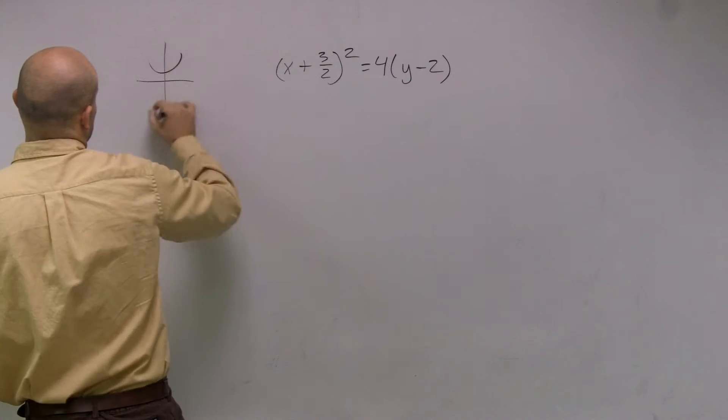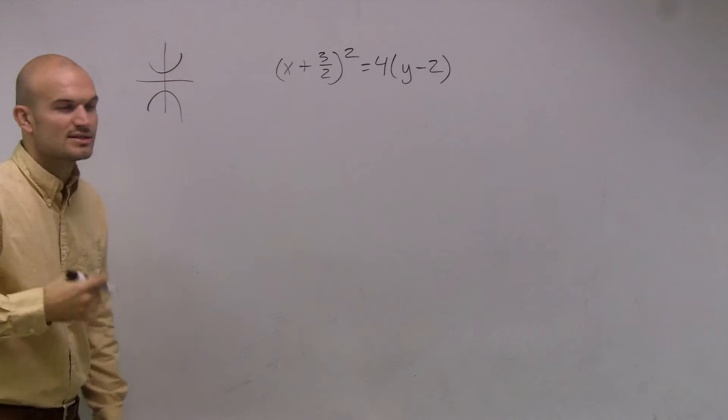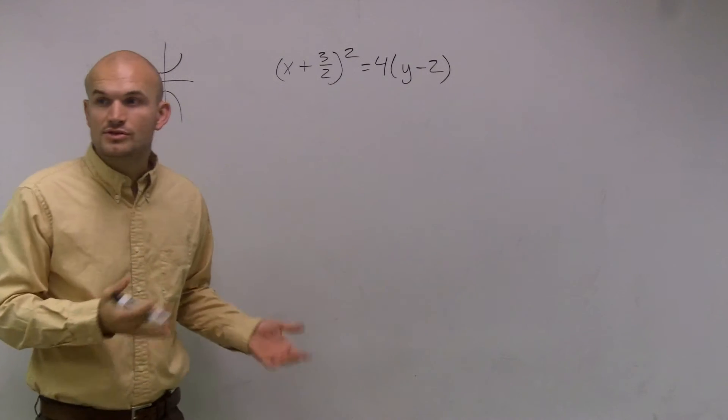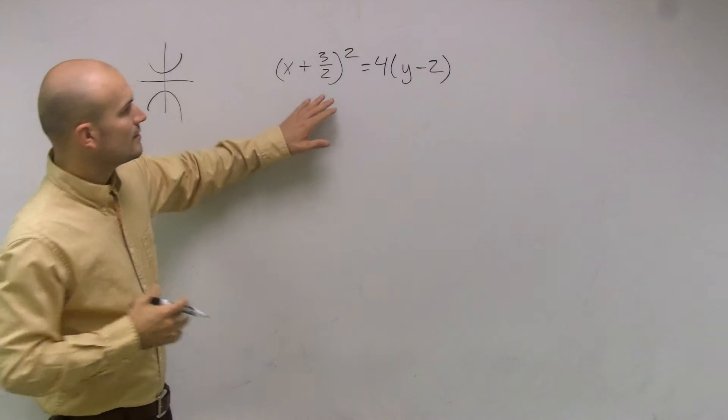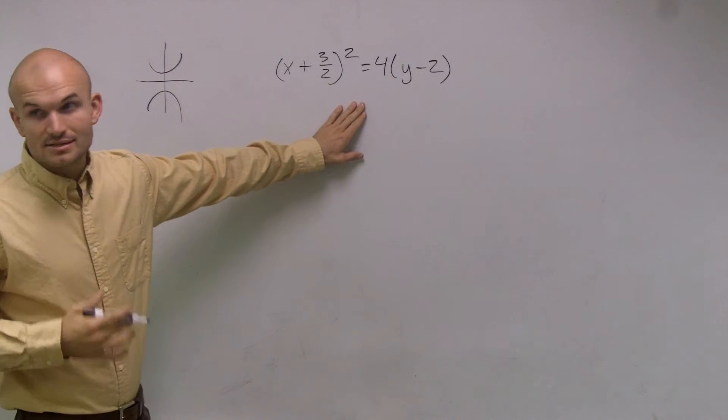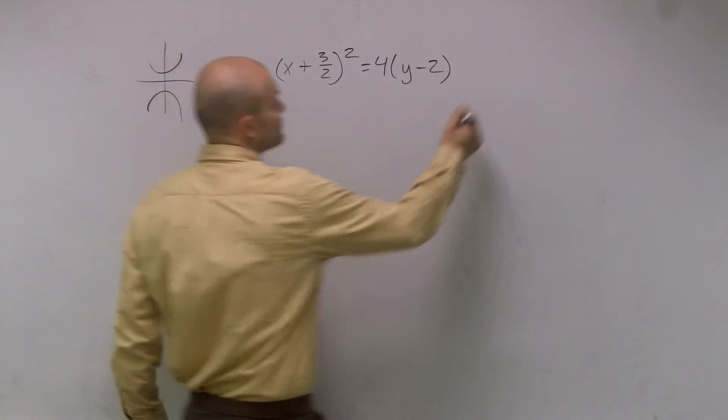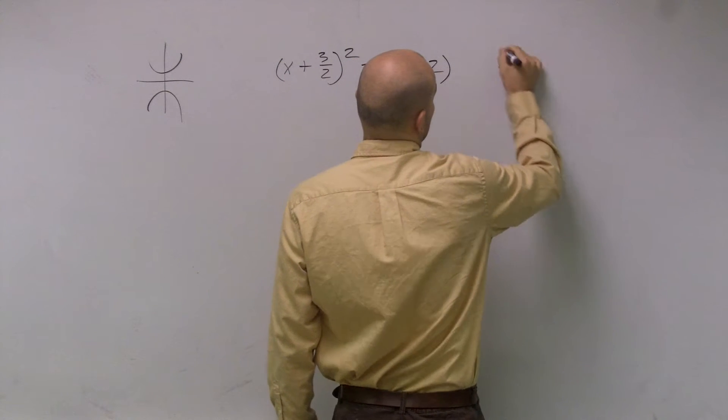It's going to look something like this or look something like that. Something that's a parabola we're used to when dealing with functions. Now that I've determined it has a vertical axis of symmetry, the next thing I want to do is write in our equation.